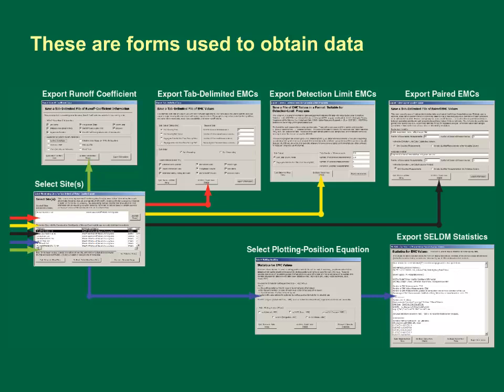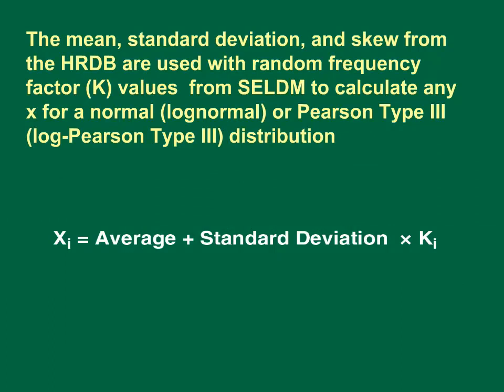Once you complete the site selection, the menu will take you to the appropriate form based on your main menu selection. You can export runoff coefficient data, tab-delimited event mean concentration data, event mean concentration data in a detection limit program format, or paired event mean concentration data. If you are calculating random statistics following the dark blue path, it will bring up the form for selecting the plotting positions and then the form with statistics needed to run SELDOM. The mean, standard deviation, and skew calculated by the Highway Runoff Database are used within SELDOM to calculate a population of highway runoff event mean concentrations.